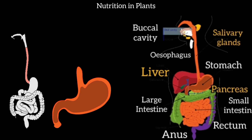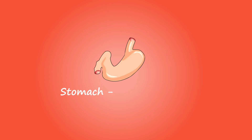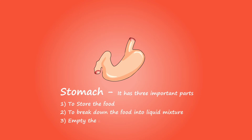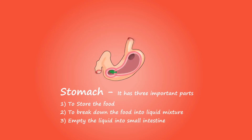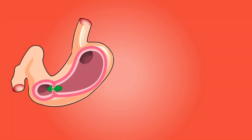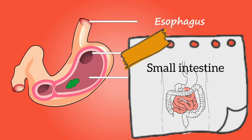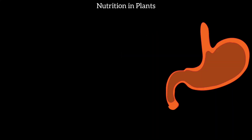When food reaches the stomach, the stomach is a thick-walled, J-shaped bag. It is the widest part of our alimentary canal. Food comes from the food pipe into the stomach.